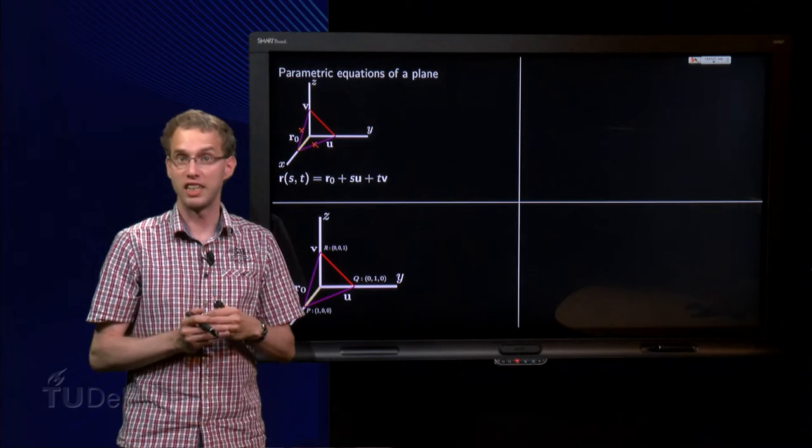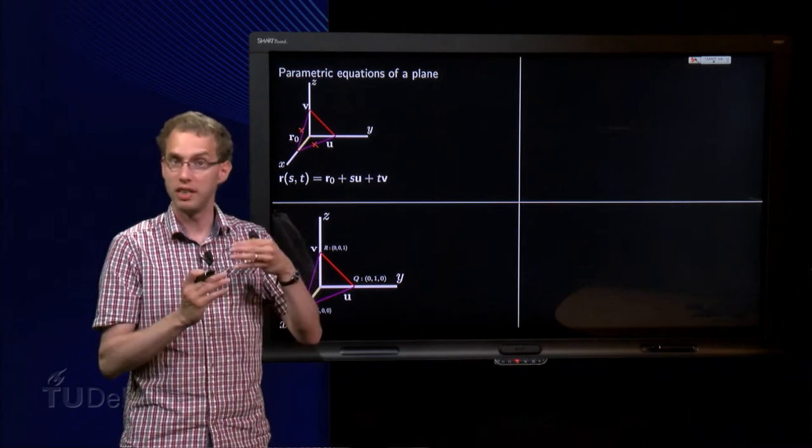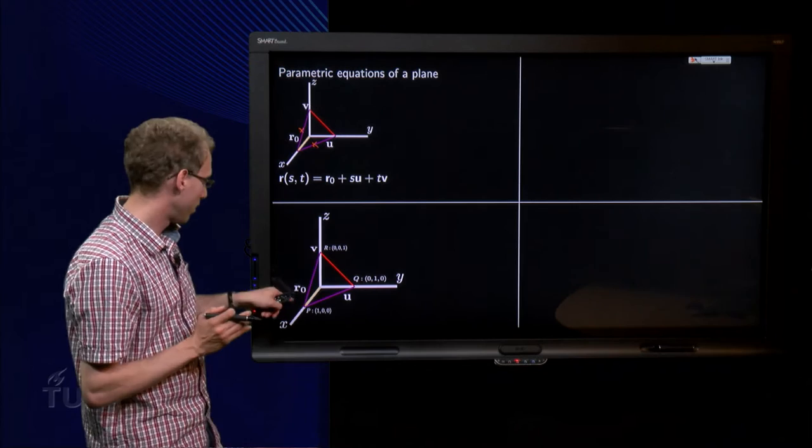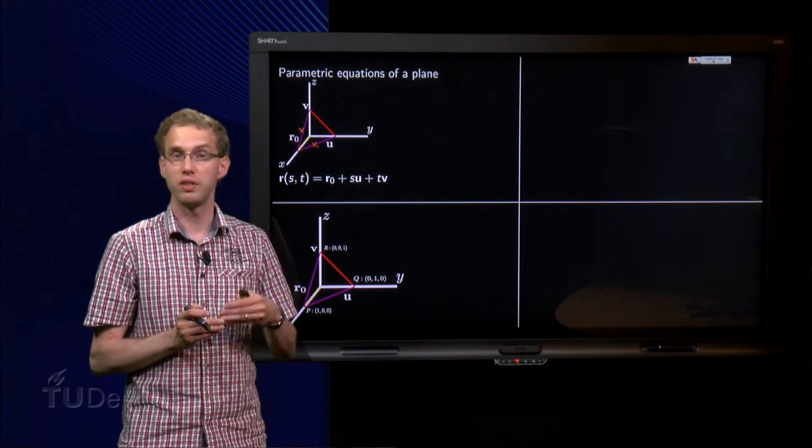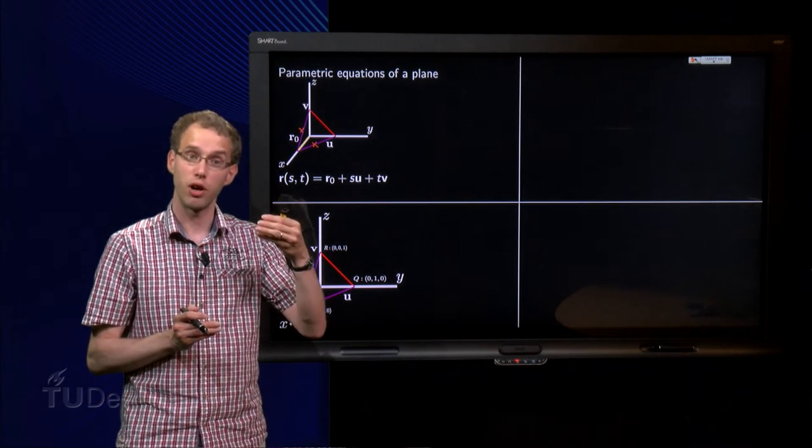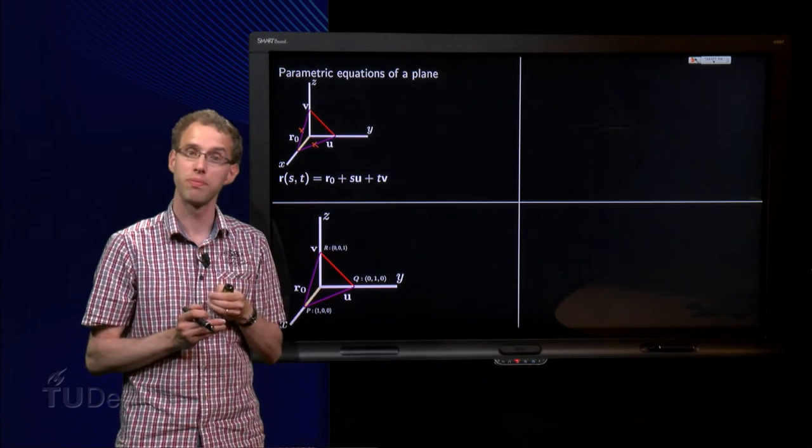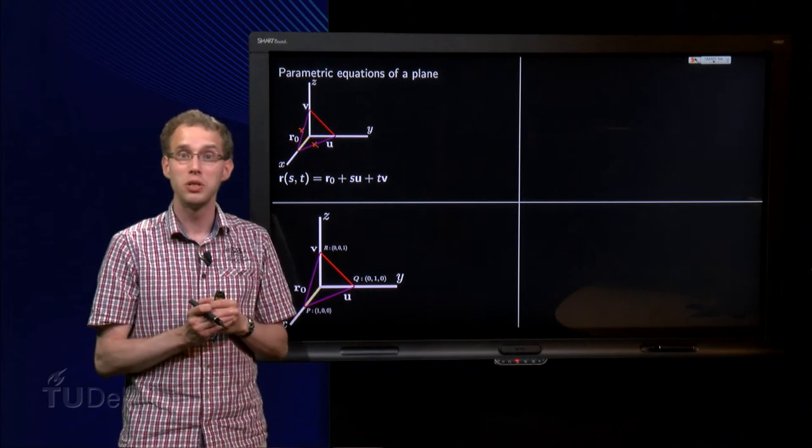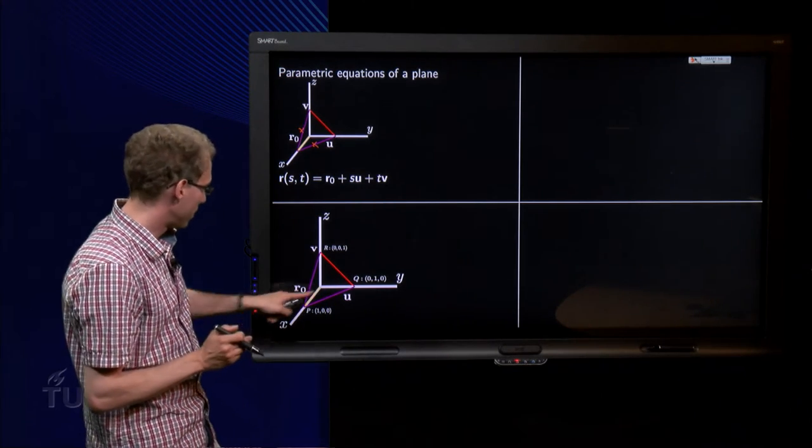First of all we need R0, that is always easy. You only need a vector from the origin to a point in the plane. Take for example the point P, so we take as our R0, 1,0,0. And then we need two vectors which are in the plane, say u and v.